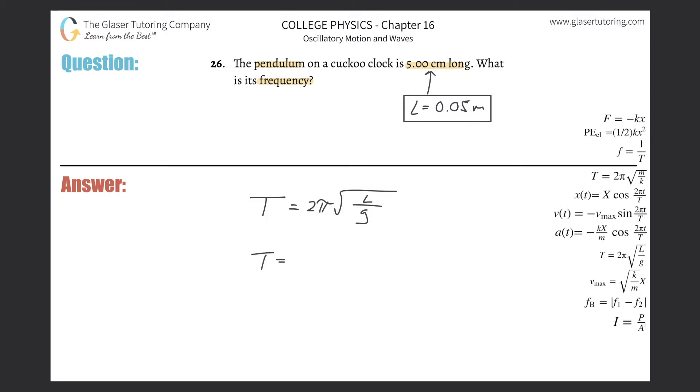T equals 2π multiplied by the square root of 0.05 divided by 9.8. Let's plug this into the calculator. So this is 2π times the square root of 0.05 divided by 9.8.